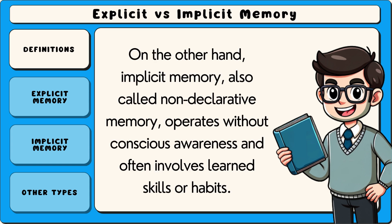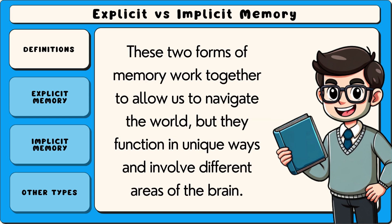On the other hand, implicit memory, also called non-declarative memory, operates without conscious awareness and often involves learned skills or habits. These two forms of memory work together to allow us to navigate the world, but they function in unique ways and involve different areas of the brain.